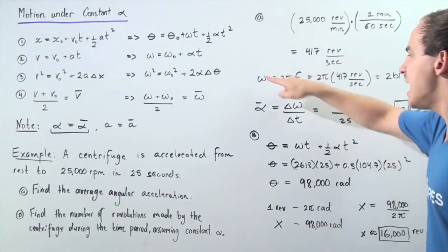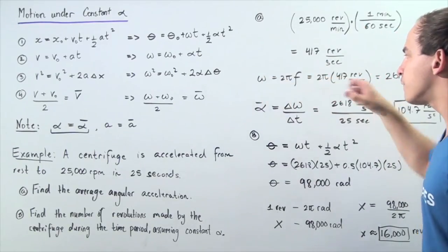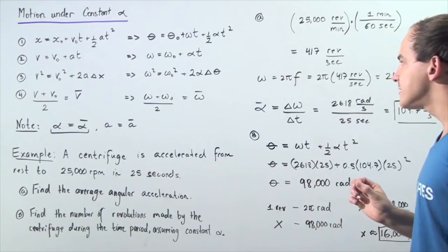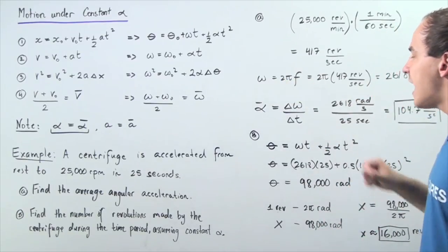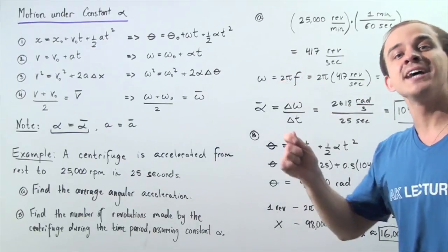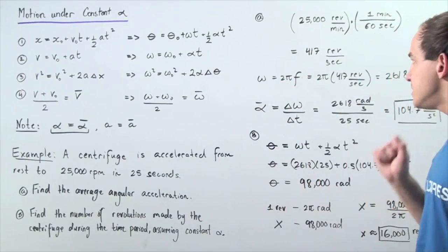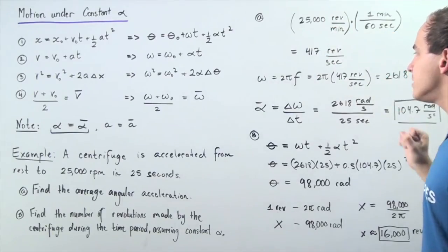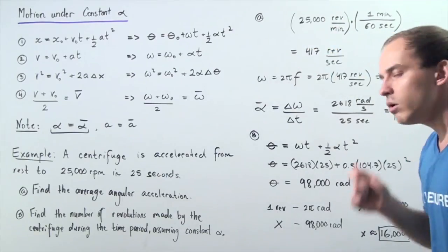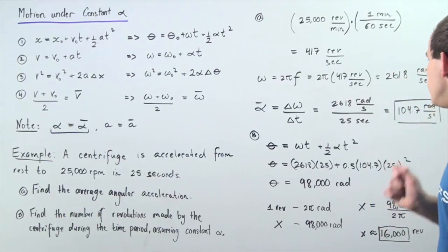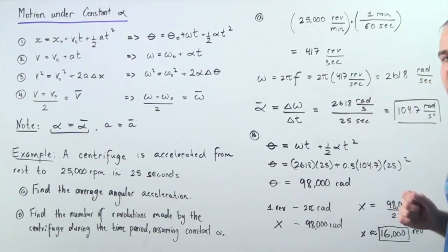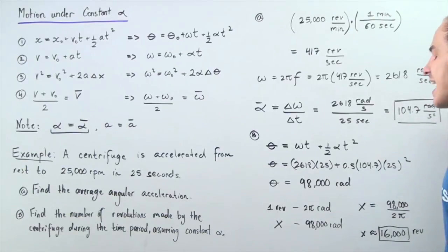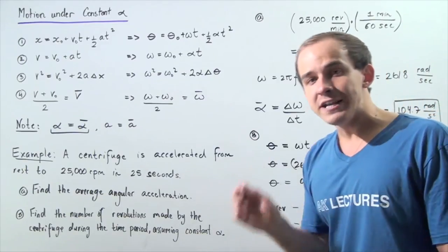Now we can use this frequency and our formula to calculate the angular velocity. Recall that angular velocity is equal to 2π times frequency, where frequency is given in revolutions per second. So we plug in 417 and multiply by 2π to get approximately 2618 radians per second as the angular frequency.